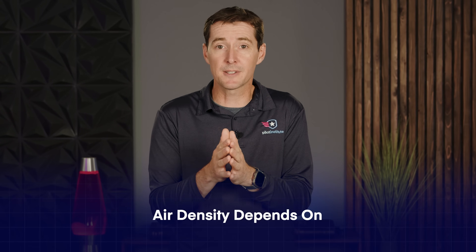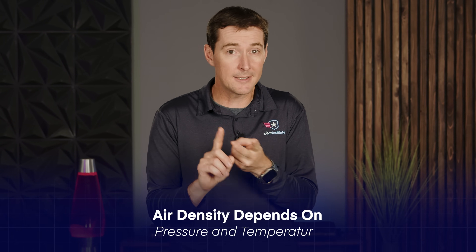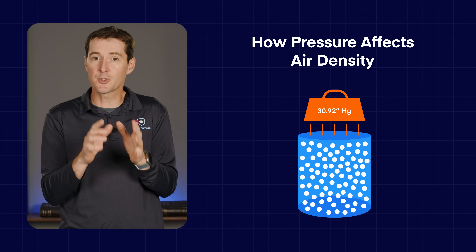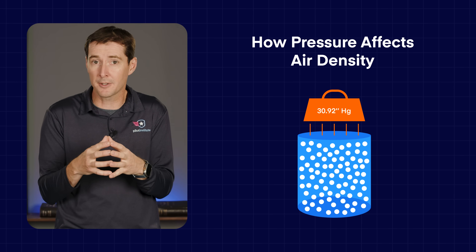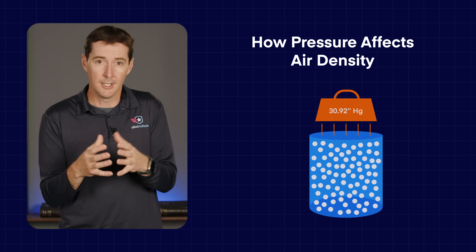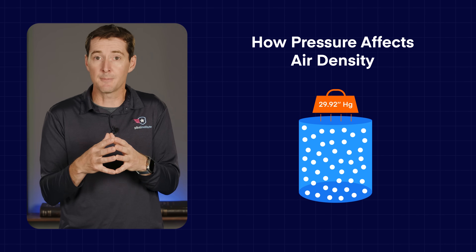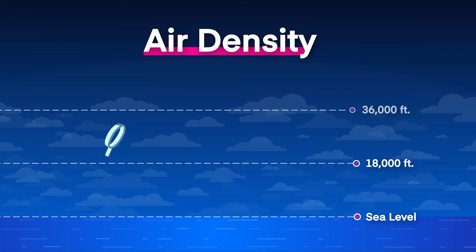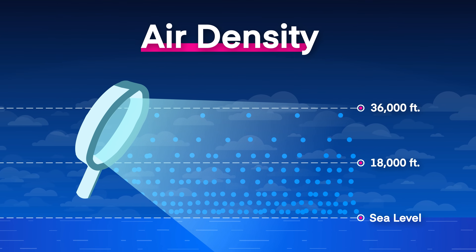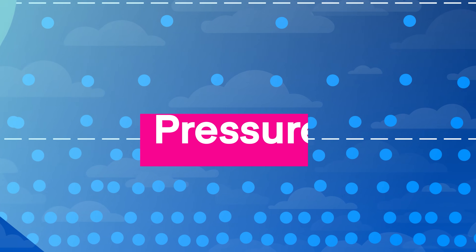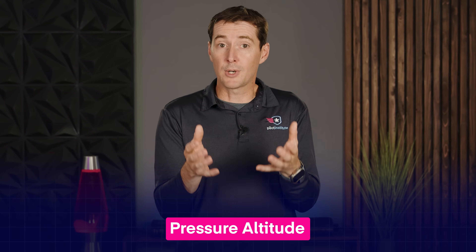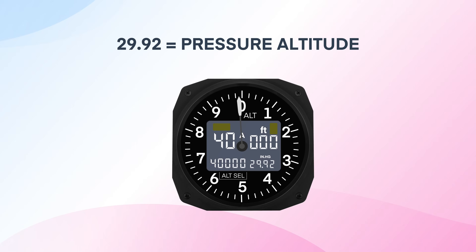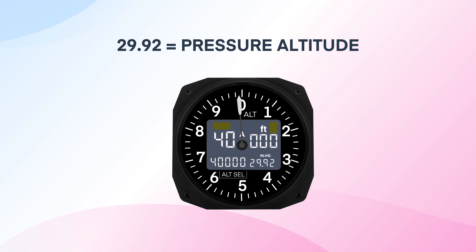So what exactly affects air density? Two of the biggest factors are pressure and temperature. Higher pressures squeeze air molecules closer together, making the air denser. Lower pressure lets them spread out, making it thinner. So to figure out how dense the air is on any given day, we need to start by looking at pressure. And that brings us to pressure altitude. You've probably heard: just set your altimeter to 29.92, and that's your pressure altitude — but what does that actually mean?